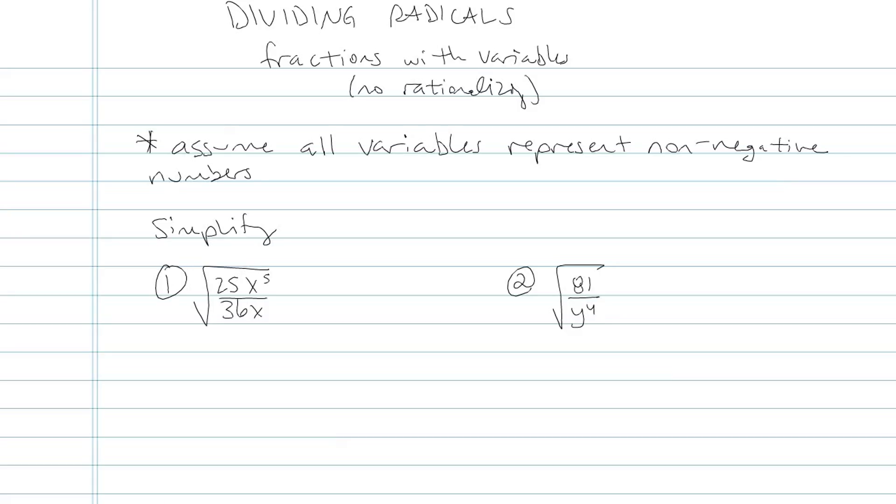We're going to be looking at simplifying fractions with variables that are under square roots, dividing radicals that have fractions with variables. In particular, we're not going to be looking at rationalizing the denominator yet. That's going to be like the top level. This is like second to top level in terms of difficulty.